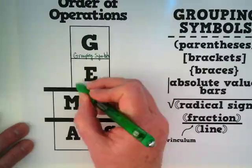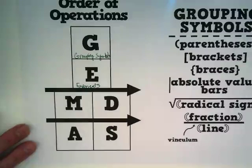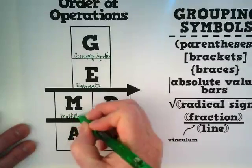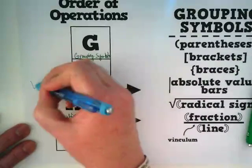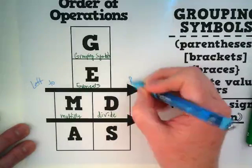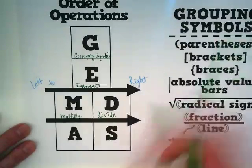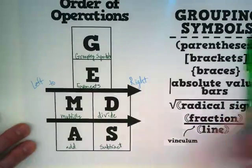E stands for exponents. This next step is where the most mistakes happen. People get M, D in their head and they think that M has to be first and D has to be second. We multiply and divide, but we do it going from left to right. So if there is a division problem on the left, it gets done first, even though M is first in what we are looking at here.